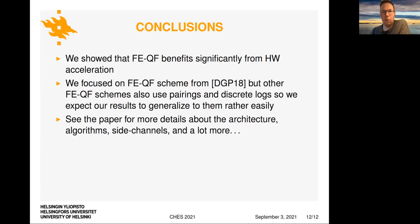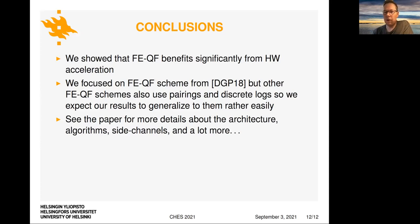As a conclusion, what we showed was that functional encryption for quadratic functions benefits significantly from hardware acceleration. Although we focused on one specific scheme, the other FEQF schemes that have been proposed are actually very similar in structure — they use pairings and discrete logarithms — so we expect our results generalize to them also rather easily, and our accelerator can be used for different FEQF schemes with only very minor modifications. If you are interested in the paper, or the details about the architecture, algorithms, and discussion on side channel attacks, please see the paper.